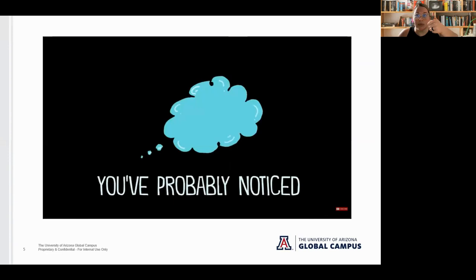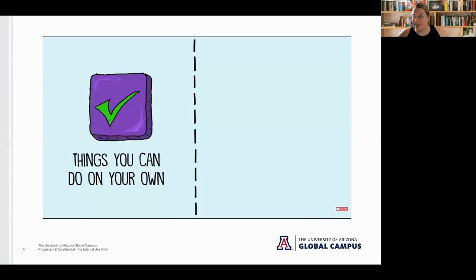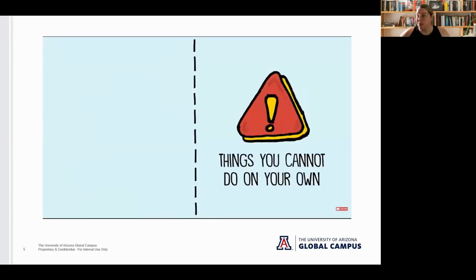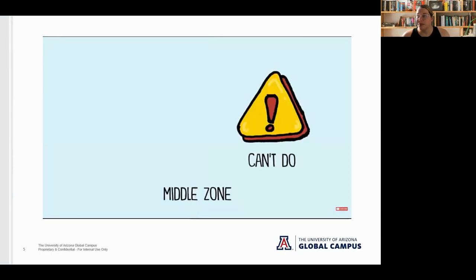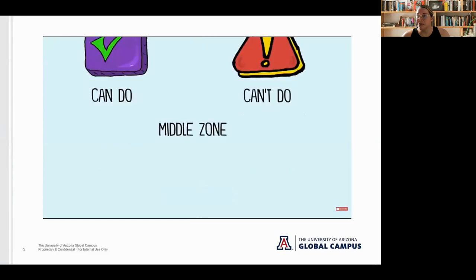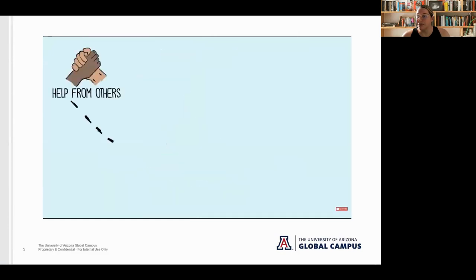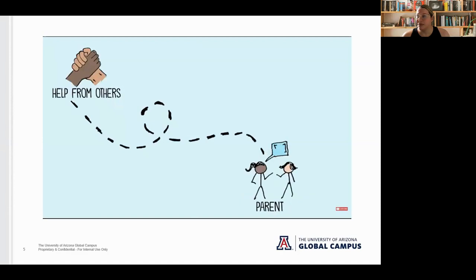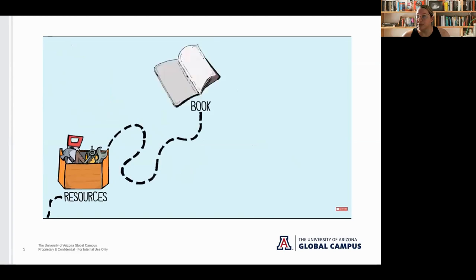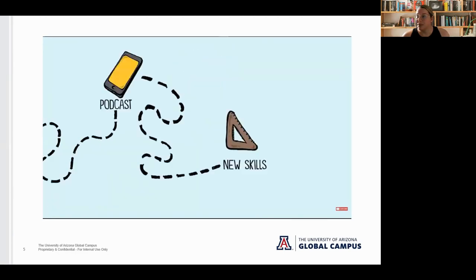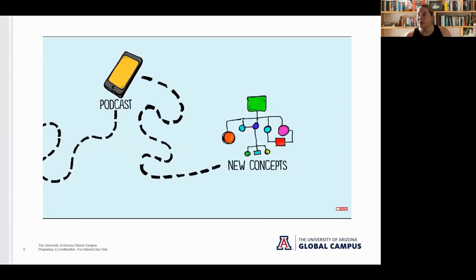You've probably noticed that there are things you can do on your own and things that are impossible to do, but there are also certain things in a middle zone that you can't do on your own quite yet but you can accomplish with a little bit of help. That help might be from a teacher, a parent or guardian, or from a peer, but it might also be a resource like a book, a video, or a podcast. This is true not only of gaining new skills but also learning new information or understanding new concepts.